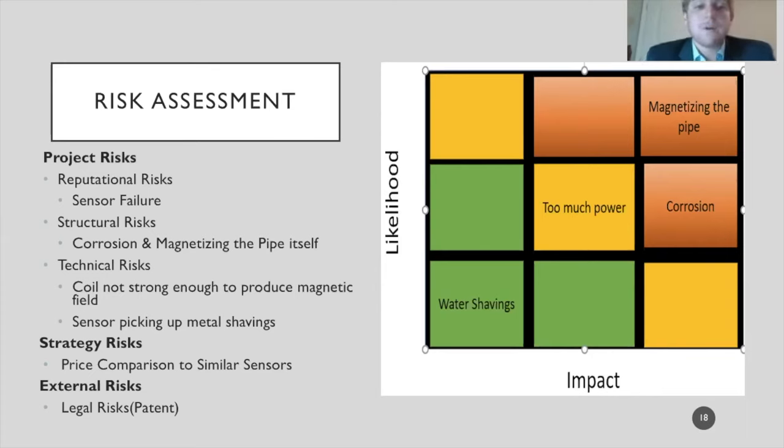Also in the frack process, many fluids, water, and frack fluids are reused, and they pick up metal shavings while they go. There's a possibility that the sensor picks up the metal shavings, causing a false positive. Over to the right, you can see our quantitative risk analysis that we associated with these sensors, with likelihood as the y-axis and impact as the x-axis. The green square showing low likelihood and low impact, the yellow showing moderate likelihood and moderate impact, and the red showing high likelihood and high impact.